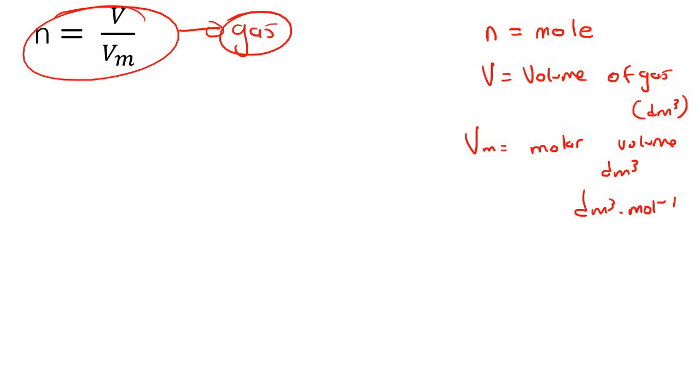Now I forgot to mention this value over here, it's a constant value which is going to be 22.4. Now your teacher is going to tell you that you can only use 22.4 when you are at something called STP.